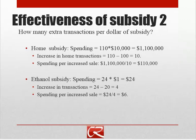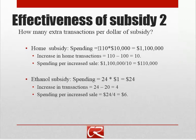We can think about how many extra transactions we get per dollar of subsidy. In our home subsidy example, after the subsidy was established we had 110 homes being transacted at a $10,000 subsidy, so total cost was $1,100,000. We had 10 extra transactions, meaning spending per increased sale was $110,000 — obviously quite a lot. In the ethanol example, we had 24 transactions at a $1 subsidy, totaling $24 in spending for 4 extra transactions, or $6 per transaction.